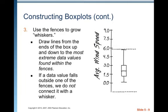Use the fences to grow whiskers. Draw lines from the ends of the box up and down to the most extreme data values found within the fences. Many times it's going to capture your maximum and your minimum, but sometimes, like in this case, the actual maximum value is larger than what you get from your larger fence. You would go to the largest value that's inside the fences. If a data value falls outside one of the fences, we do not connect it with a whisker. The minimum of 0.20 is within the lower fence, so that lower whisker goes all the way to the minimum value.